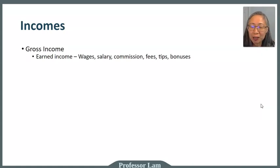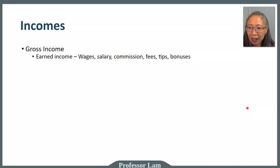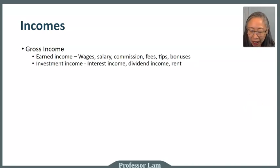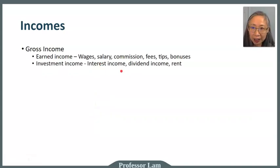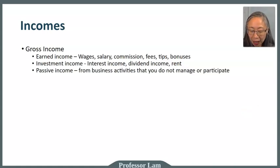There are different types of gross income. Earned income is anything you receive — wages, commissions, fees, tips, bonuses — anything paid by an employer. Then there's investment income: interest income from your savings account, dividend income from stocks or mutual funds, rent from a rental property, or dividends from a business.